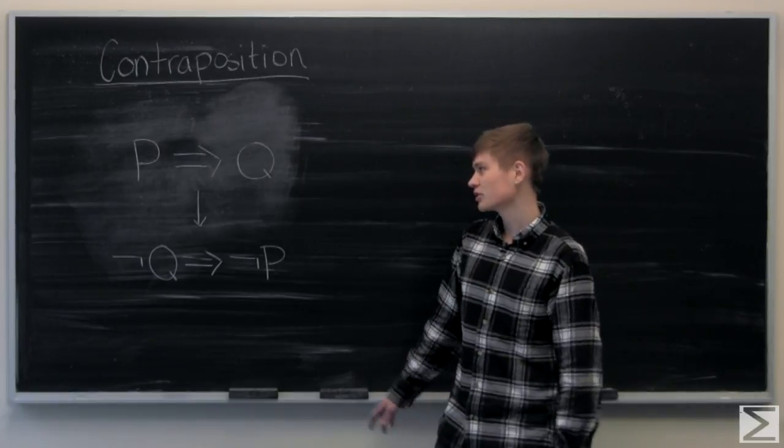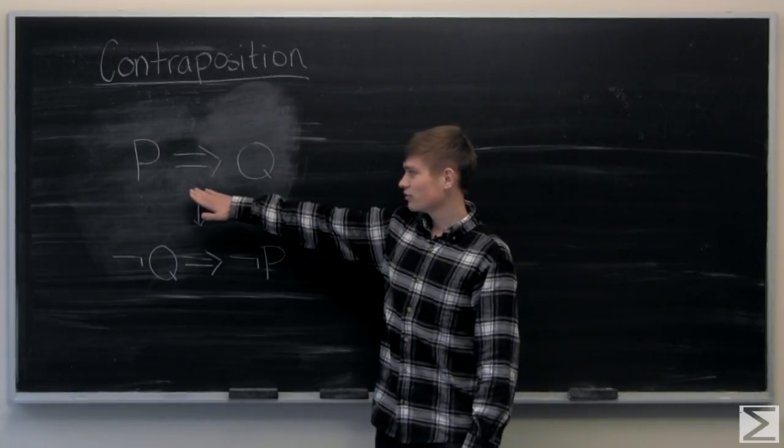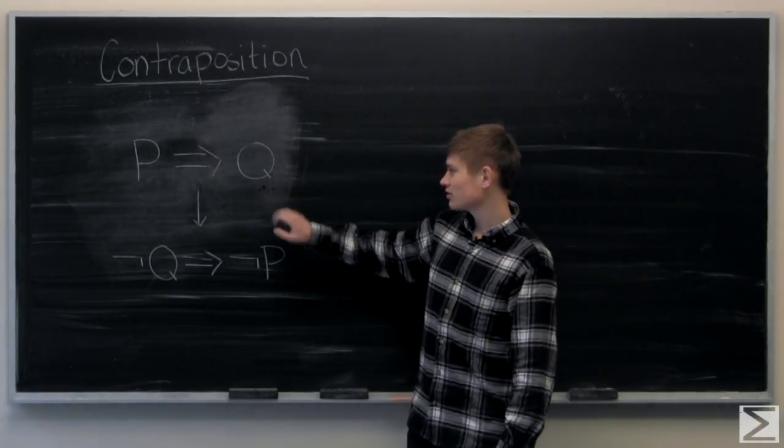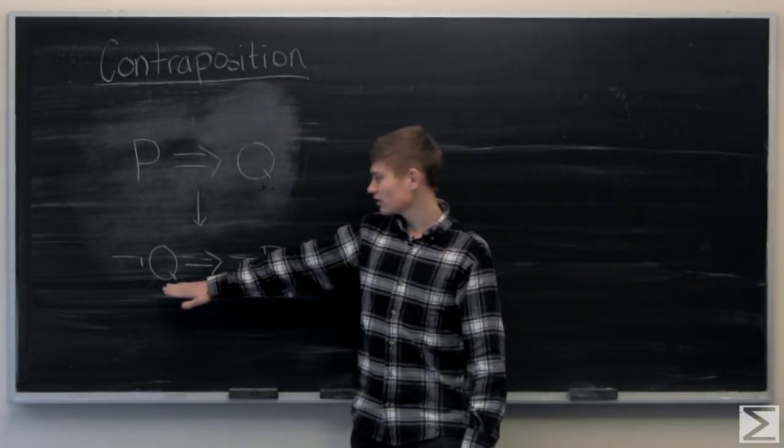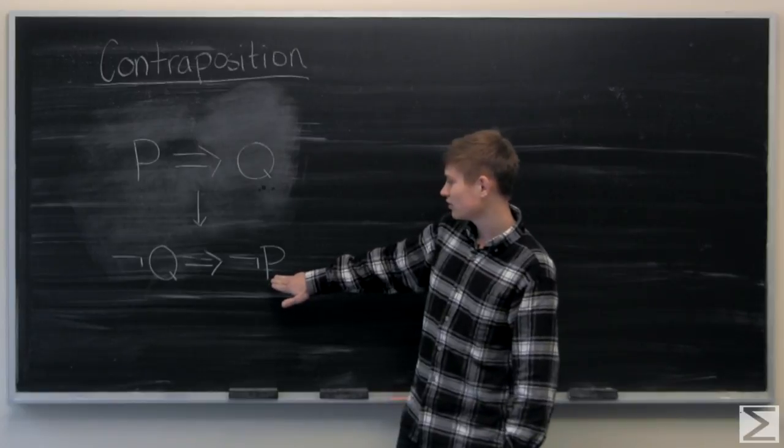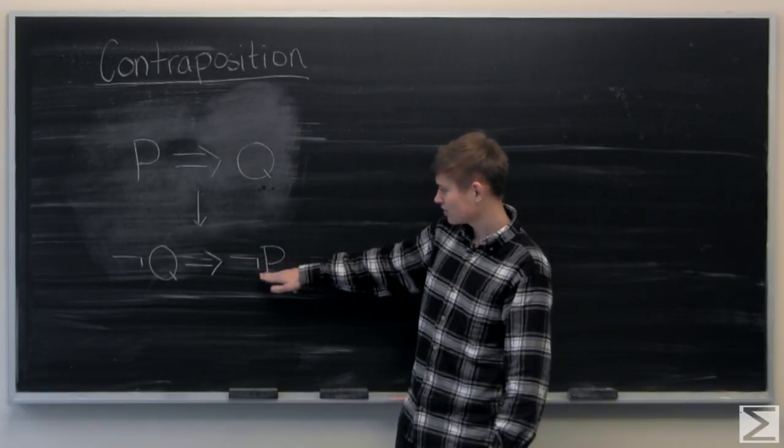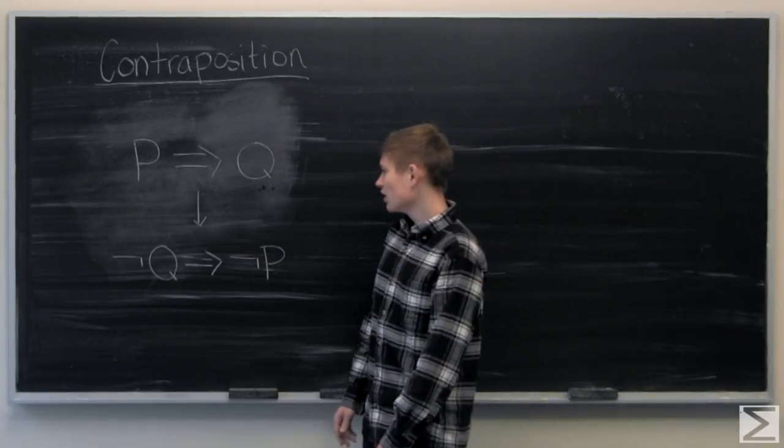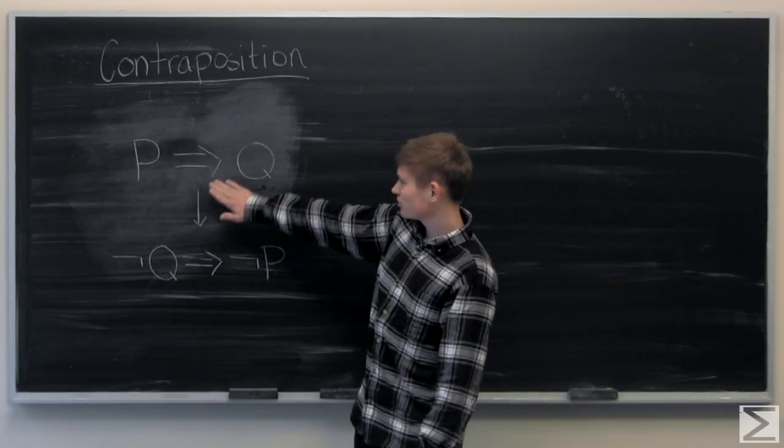The way contraposition works is that if you want to prove p implies q, this is equivalent to proving that not q implies not p, where this symbol right here means not. So if you prove it this way, you are also proving this.